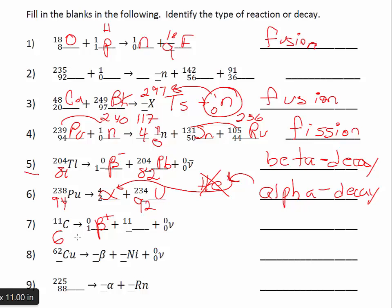Six from the carbon must equal one plus the missing number here plus zero, so the missing number is five. And the element with an atomic number of five is boron. This would be positron decay.